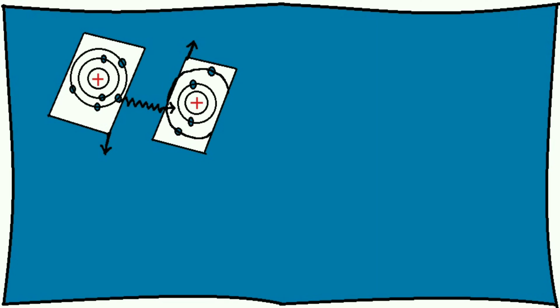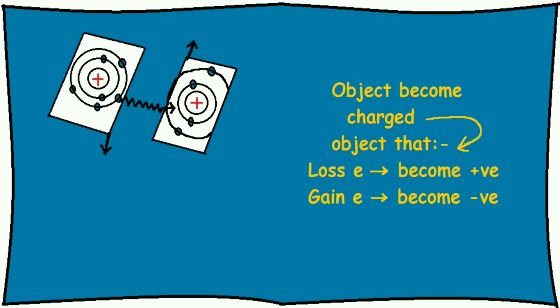So, these objects become charged and attract or repel each other. The object from which the electron goes becomes positively charged and the object on which electron comes becomes negatively charged.